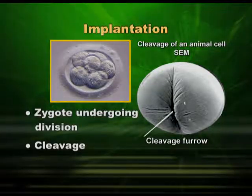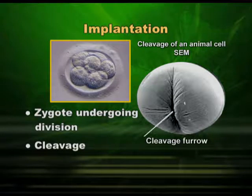By any chance, if two ova are released and two follicles became Graafian follicles, both ova will be fertilized and two zygotes will be formed. In that case, it will be non-identical twins.